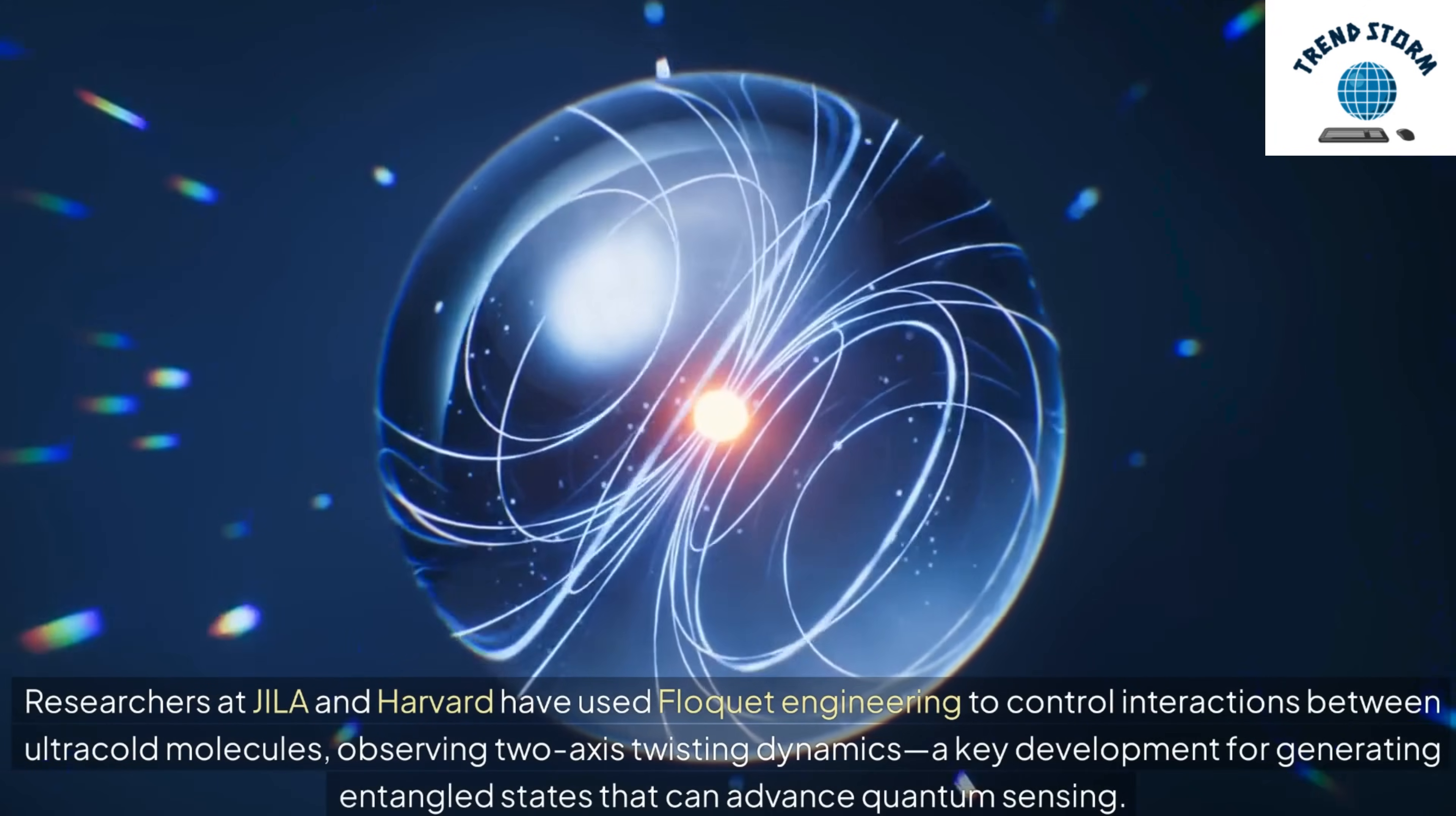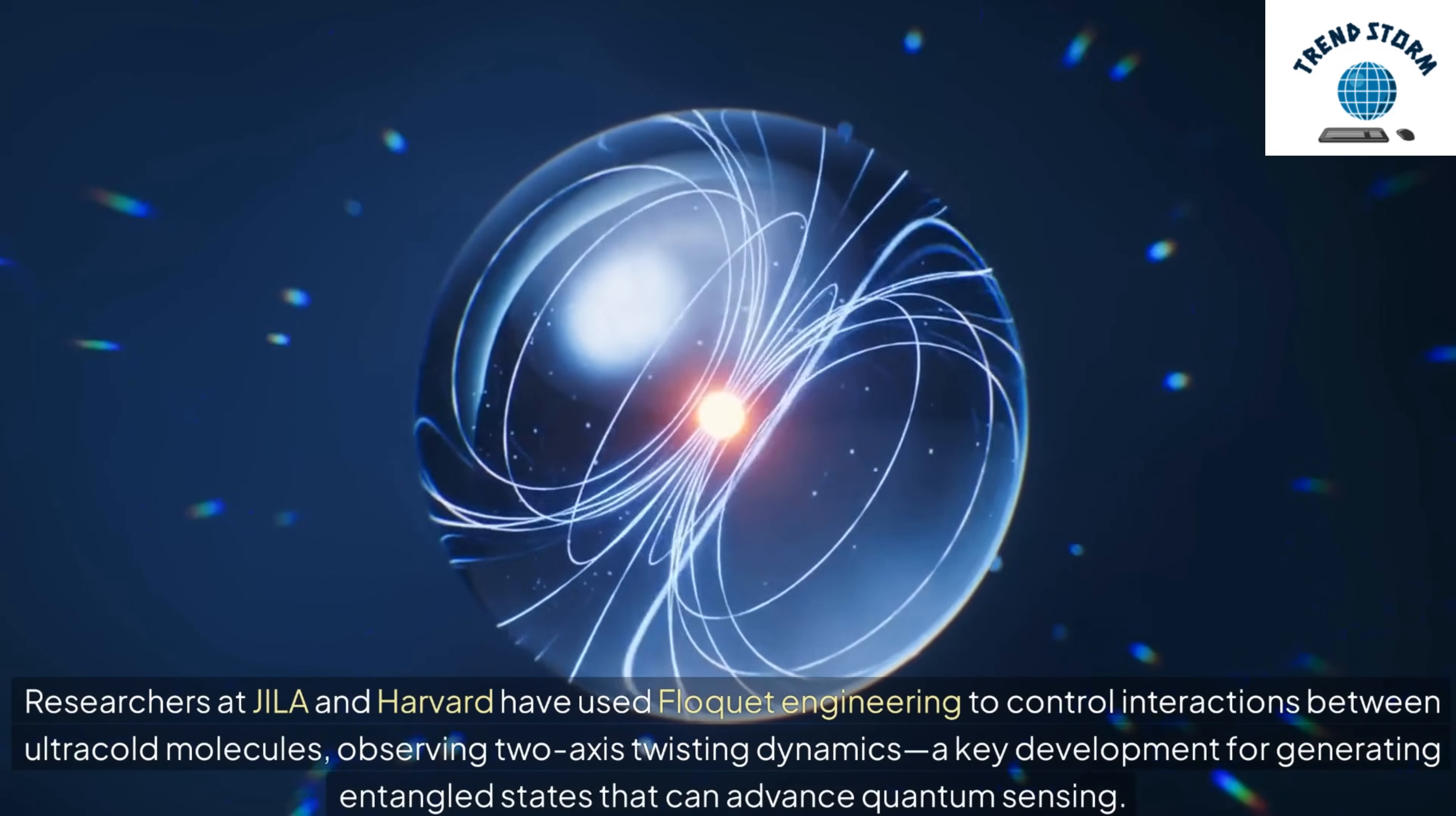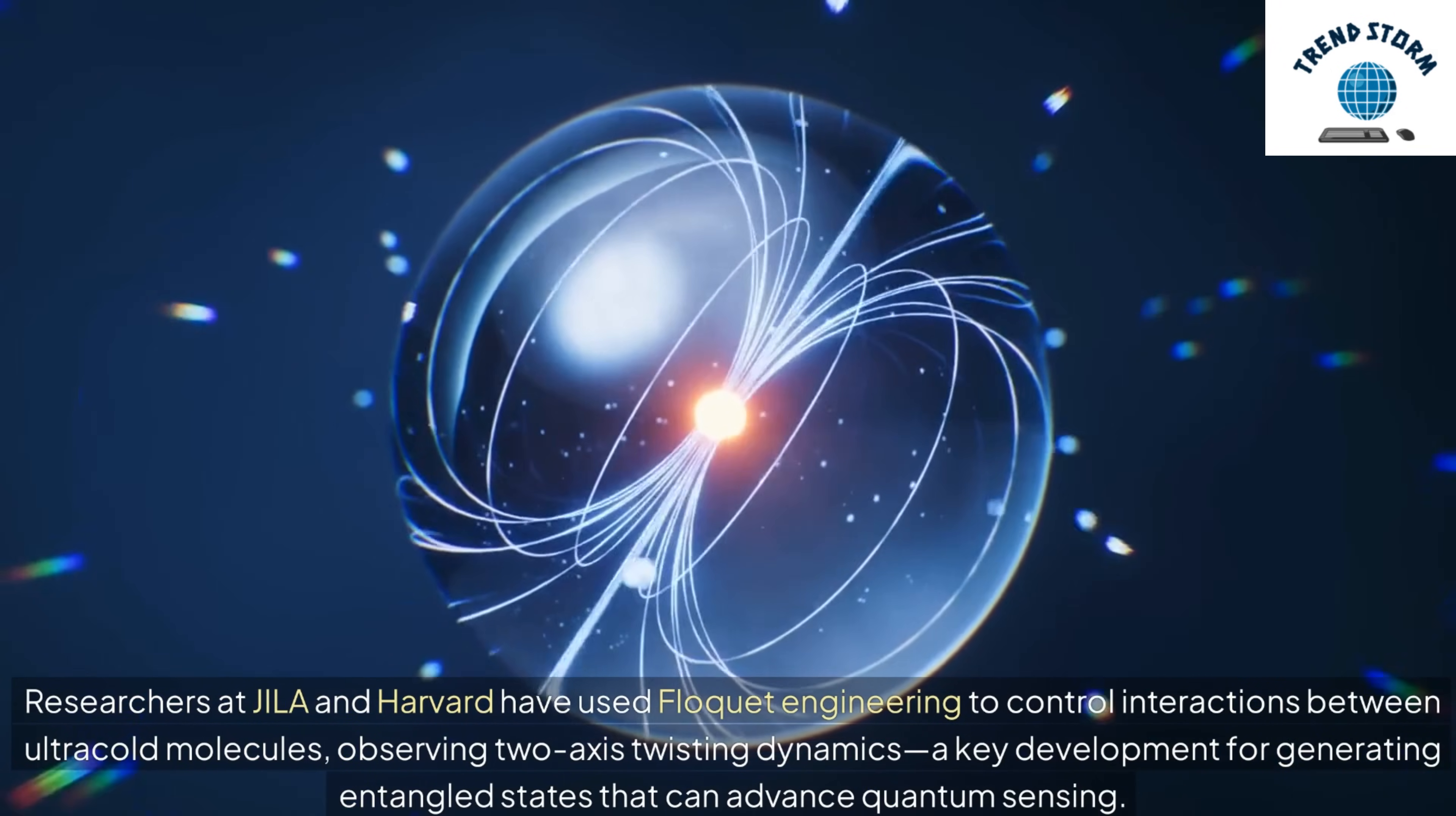Researchers at JILA and Harvard have used Floquet engineering to control interactions between ultracold molecules, observing two-axis twisting dynamics. A key development for generating entangled states that can advance quantum sensing.